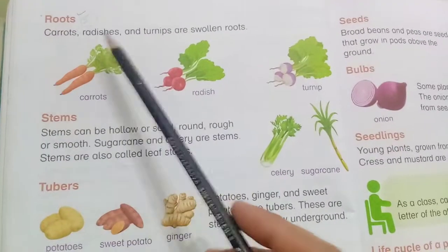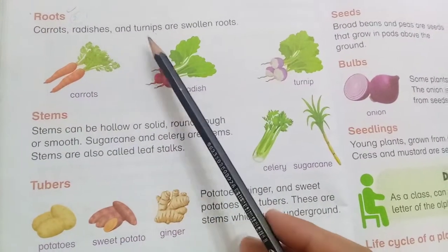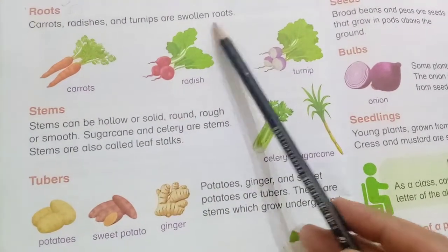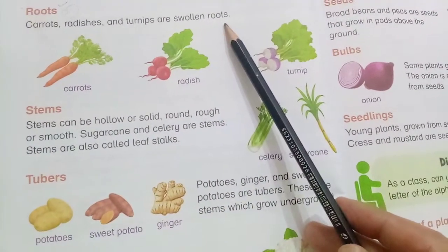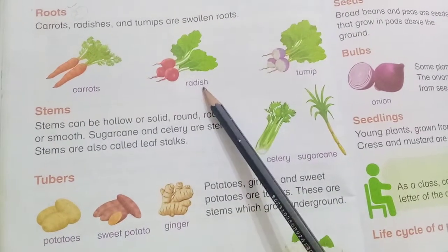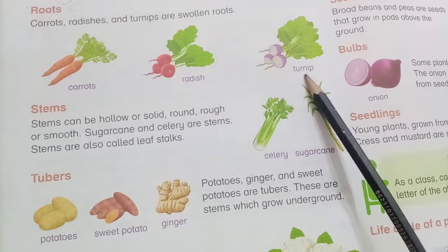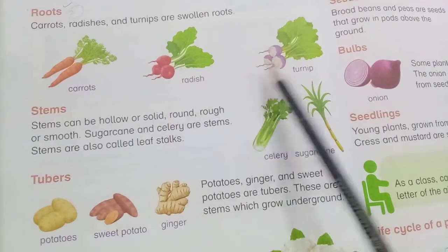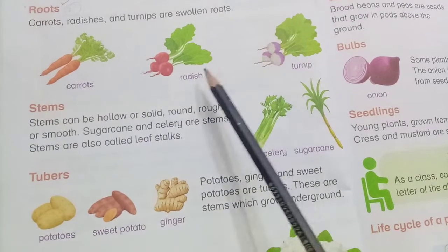Carrot, radish and turnips are swollen roots.